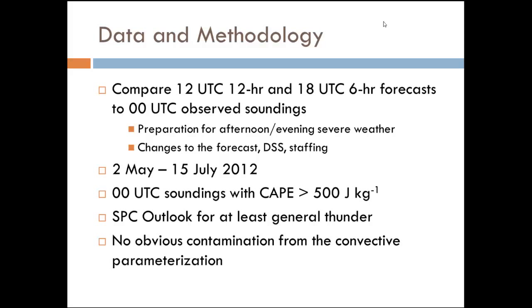The study goes from the 2nd of May, since that was the first 0Z data we had, through the 15th of July in 2012. We didn't have a lot of severe weather during the summer of 2012, so it kind of stops at the 15th of July. I did eliminate soundings that had CAPE less than 500 joules per kilogram because I wanted environments that could possibly become convective. I also used the SPC Outlook for general thunder or severe weather to try and get those environments where convection might be possible. I did have to throw out several where there was contamination from the convective parameterization.